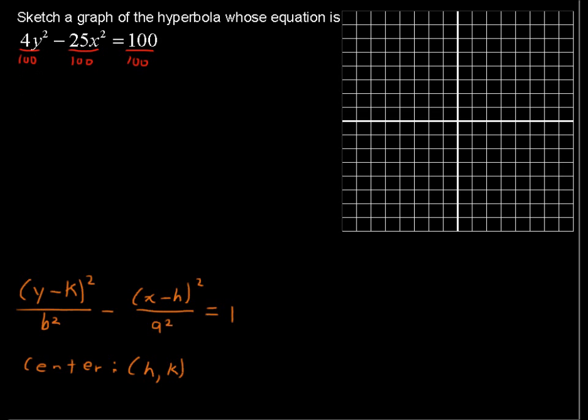And that simplifies then to y squared in the numerator and 25 in the denominator. So I've got y squared over 25 minus 25 over 100 simplifies as 1 over 4, so x squared over 4 equals 1.